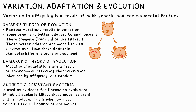Bacterial resistance to antibiotics is largely considered to be evidence of Darwinian evolution. Bacteria divide, mutations occur, and inevitably a bacterium with increased resistance will be produced. That's why we only want to use antibiotics when absolutely necessary. You also have to complete the whole course — if you don't, weaker bacteria are killed off but more resistant ones survive, reproduce, and make you even more ill.